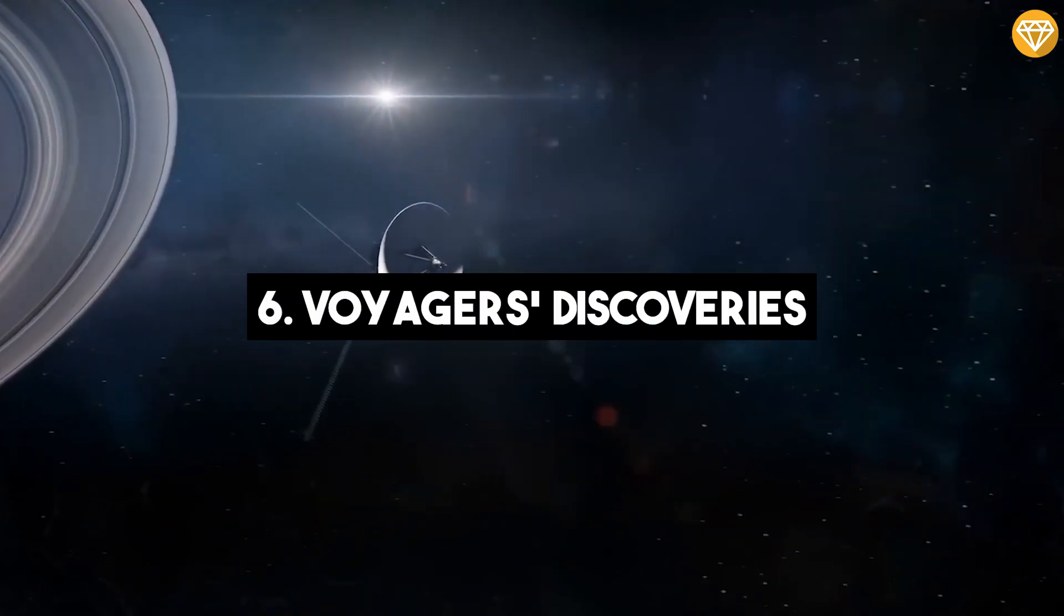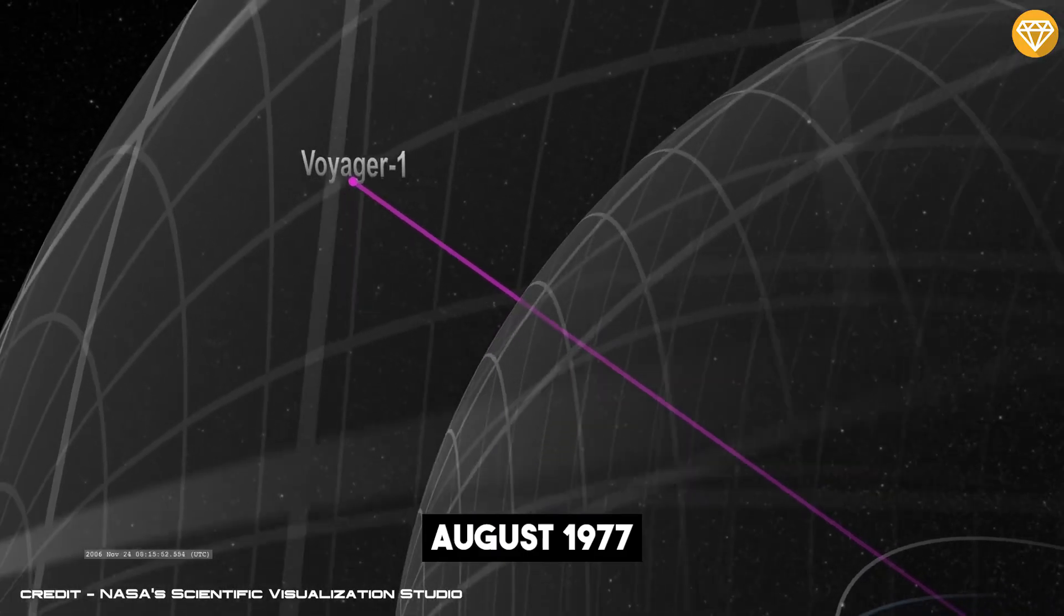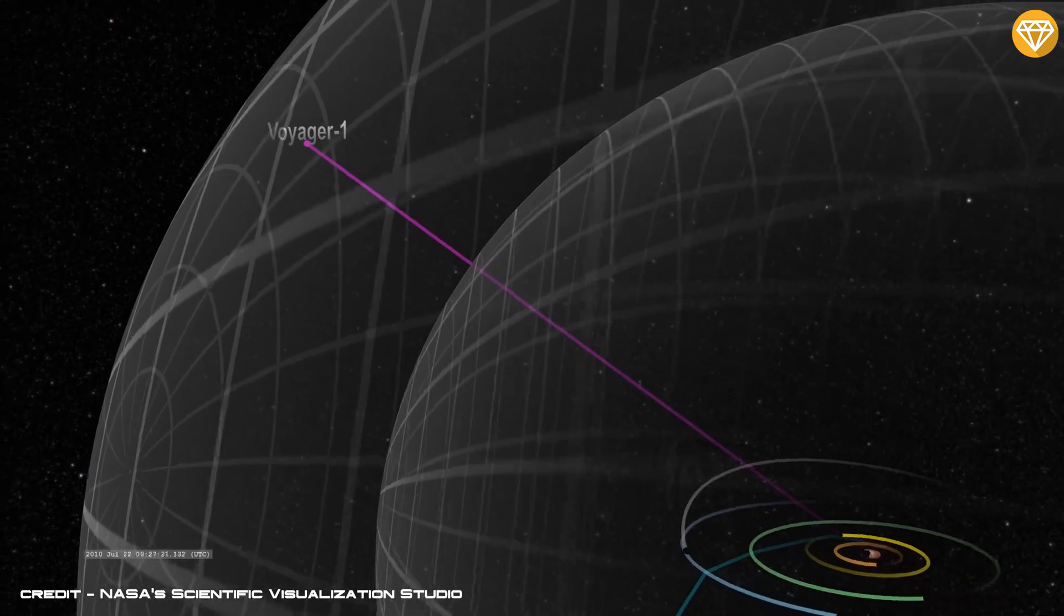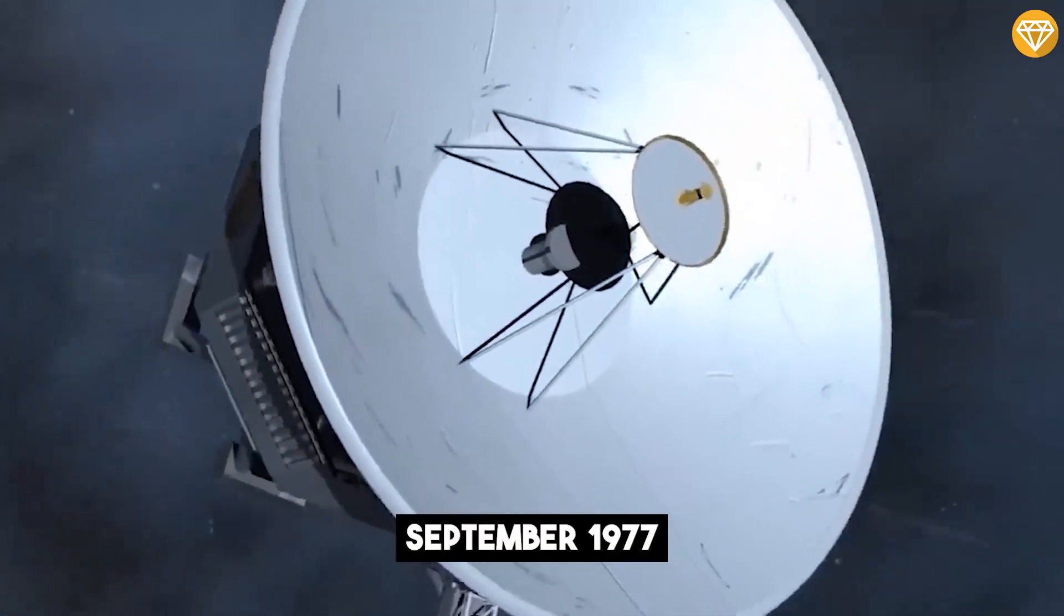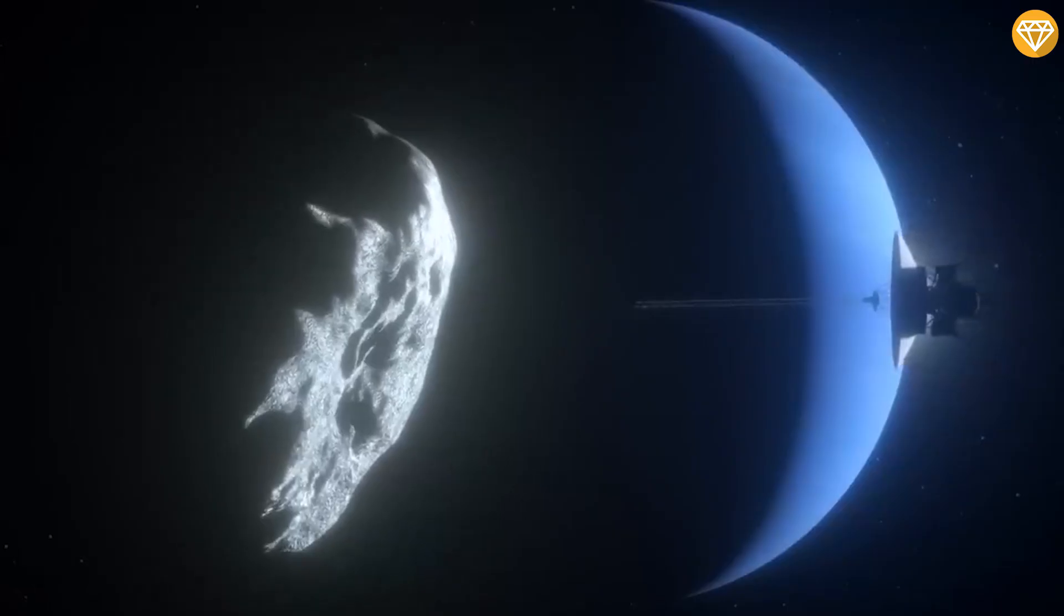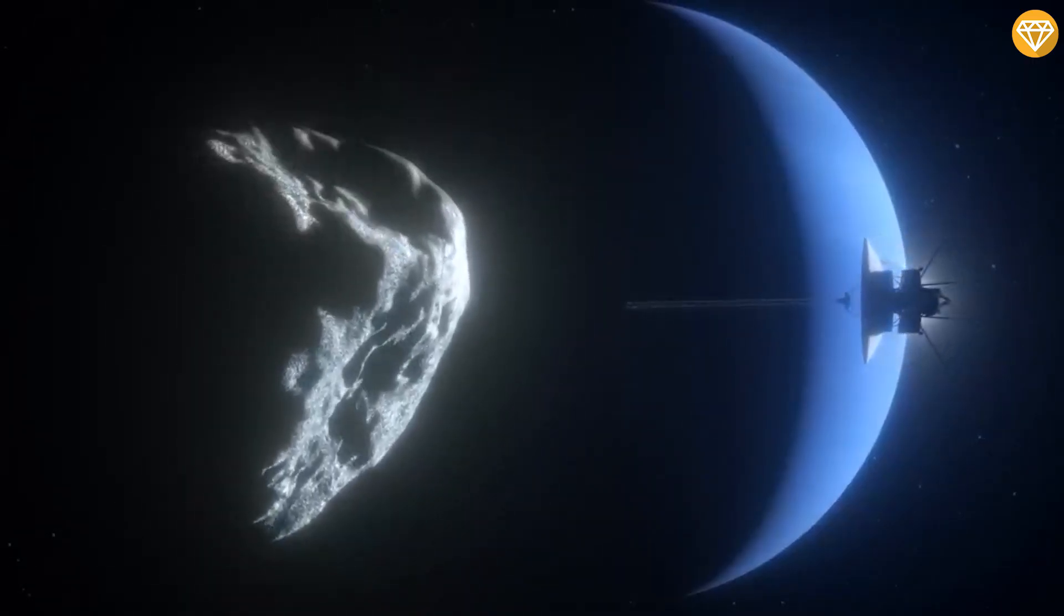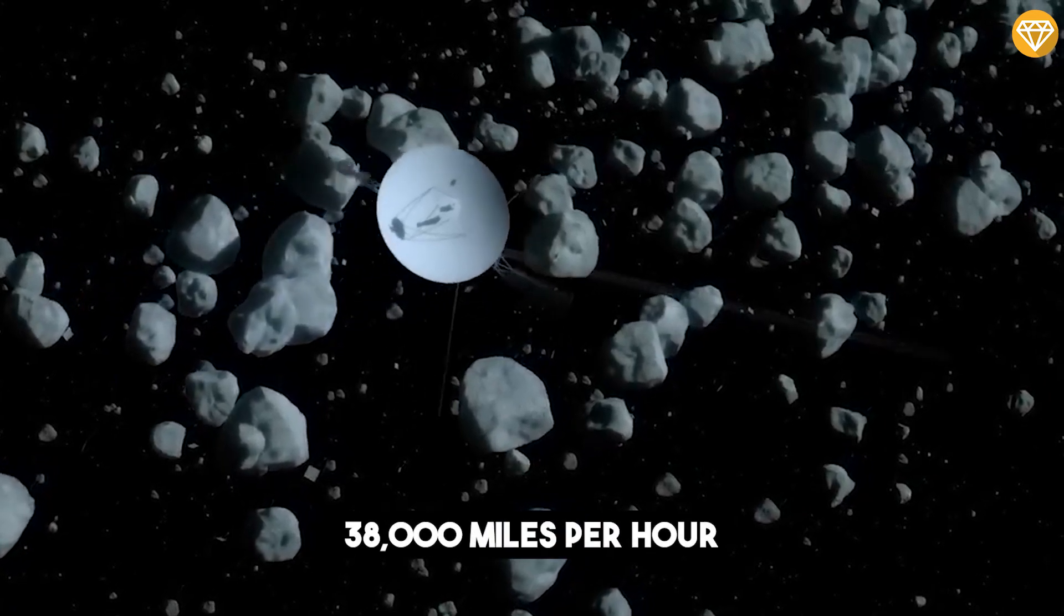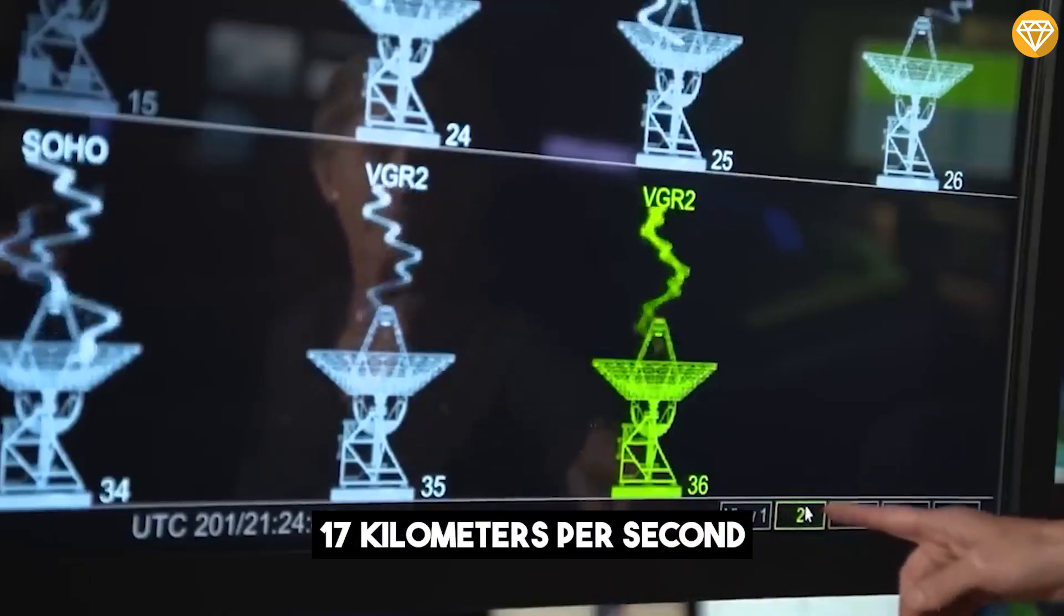Number 6: Voyager's Discoveries. In August 1977, Voyager 1 was launched to observe Jupiter, Saturn, Uranus, and Neptune. In September 1977, Voyager 2 was launched with the same objective of exploring our solar system's outer limits and the impact of the sun's reach. The Voyager spacecraft traveled at about 38,000 miles per hour or 17 kilometers per second.